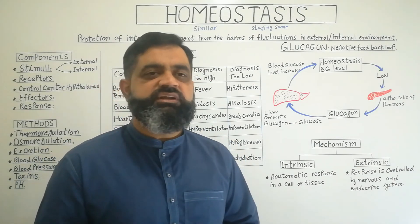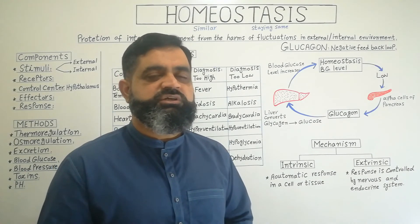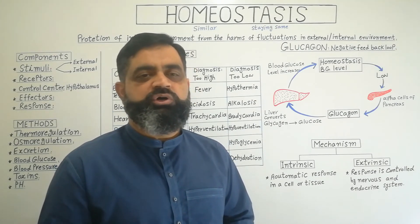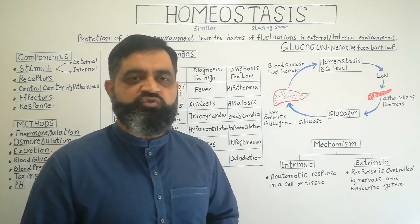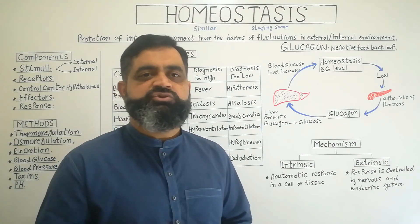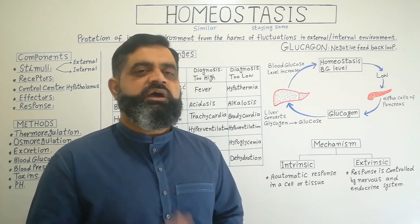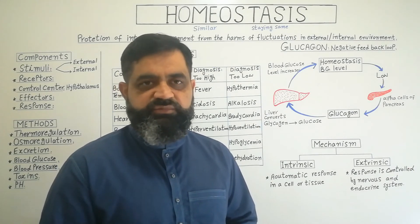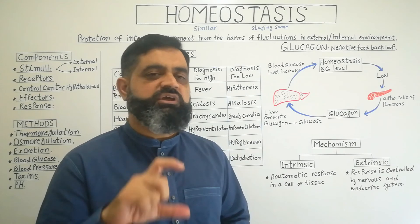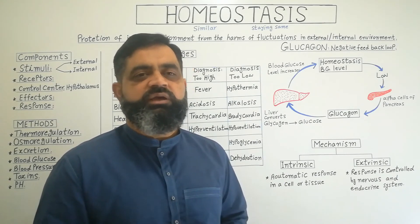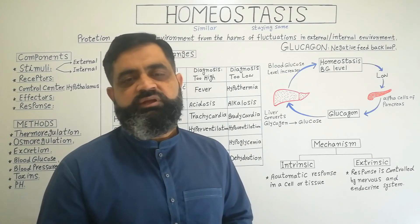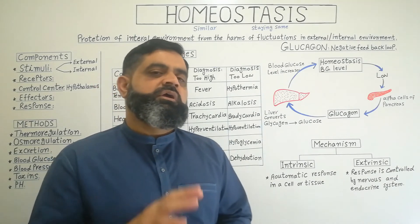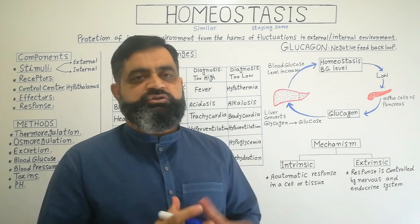If glucose level increases too much — from eating too many sweets or due to damaged beta cells causing Type 1 or Type 2 diabetes — the high blood glucose signal is sent to the pancreas. This time, beta cells receive the message and produce insulin. Insulin travels to the liver, which converts glucose into glycogen, reducing blood glucose levels. In this way, negative feedback mechanism maintains glucose balance.